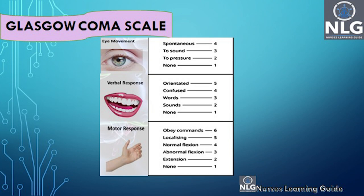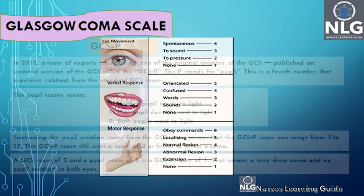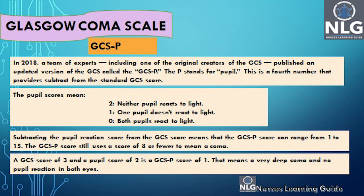These are the scoring criteria — it's easy to score and you can just go through them. In 2018, a team of experts published an updated version called GCS-P, where the P stands for pupils. This is a fourth number that providers subtract from the standard GCS score. The pupil score ranges from 0 to 2: 0 means both pupils react to light, 1 means one pupil doesn't react, and 2 means neither pupil reacts. For example, if the GCS score is 3 and the pupil score is 2, then the GCS-P score is 1.